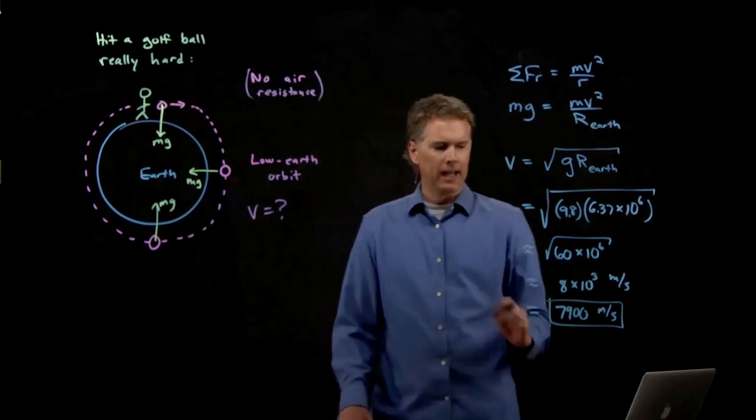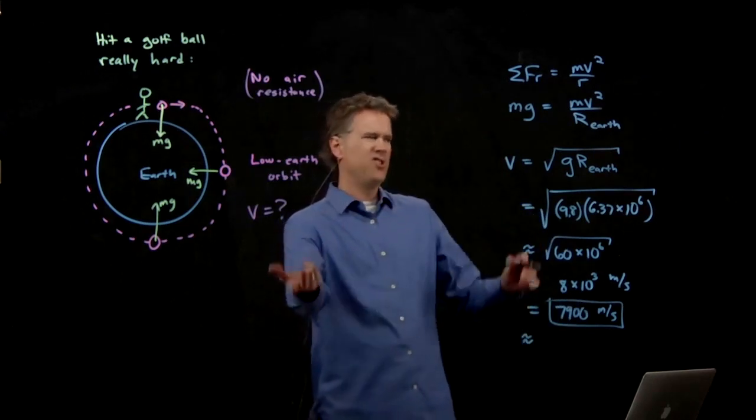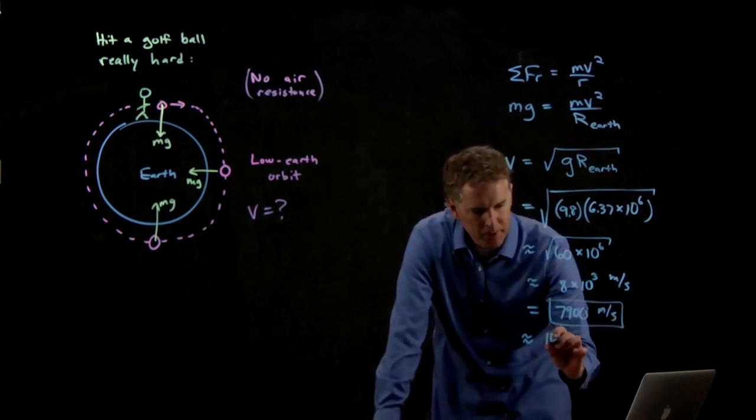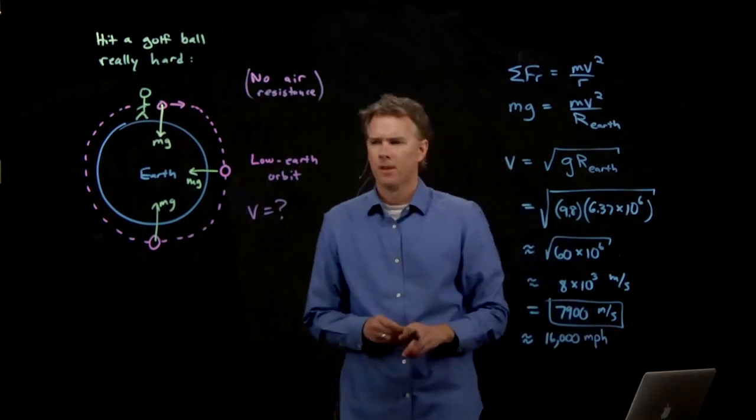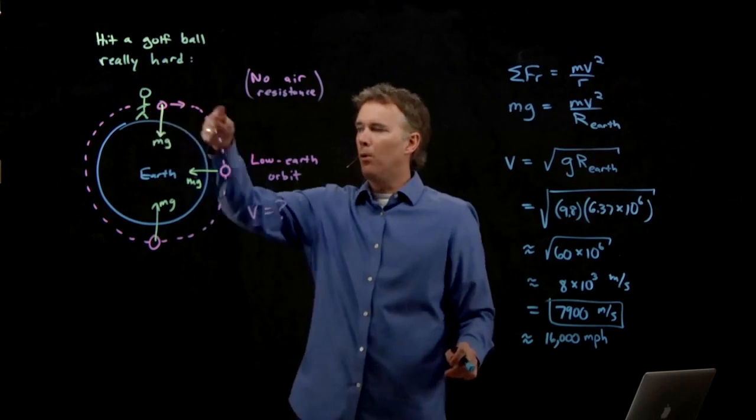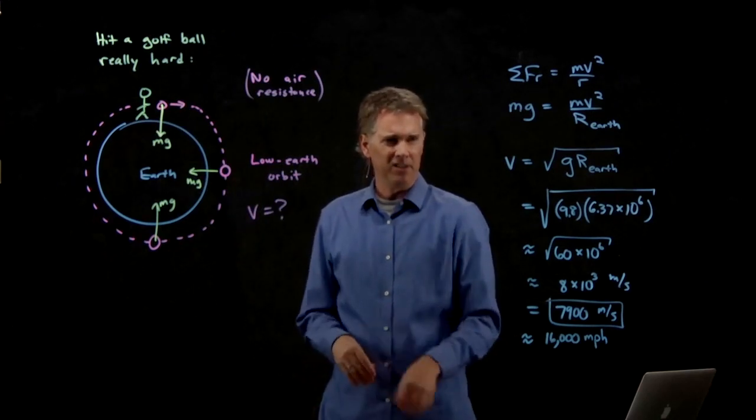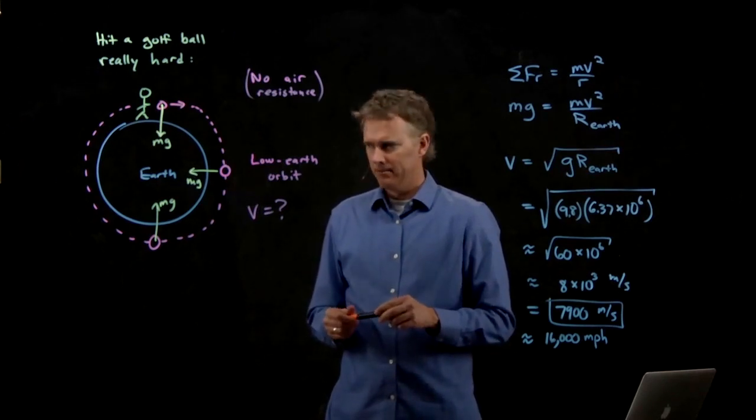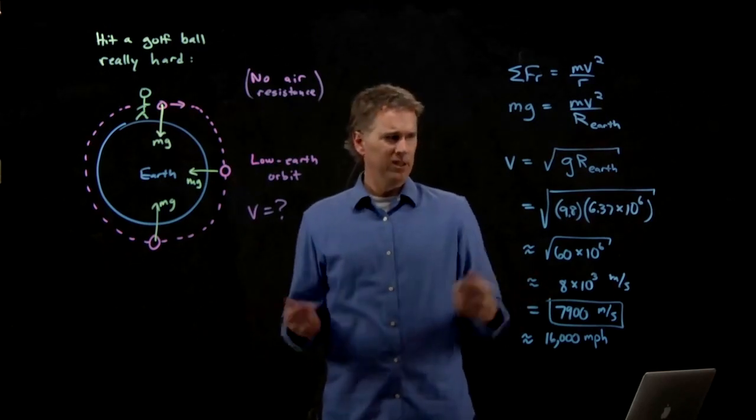7,900 meters per second. How fast is that in miles per hour? Remember, the rule is just approximate it by doubling it. So 8,000 meters per second would be about 16,000 miles per hour. If you hit the golf ball at 16,000 miles per hour, it would orbit the earth. Can you do that? Can you hit a golf ball at 16,000 miles per hour? Probably not.